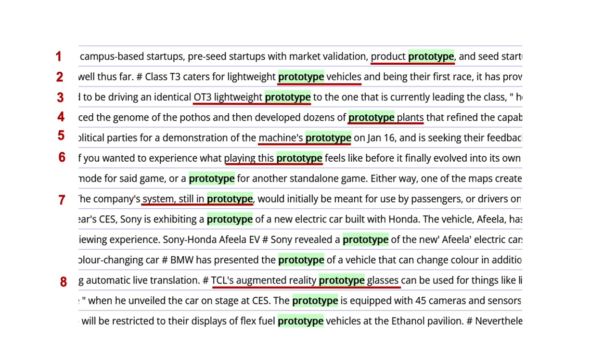The system is in prototype. In line eight, it is augmented reality prototype glasses. These were just eight of the examples that the concordancer found. I think that these examples show the types of knowledge that can help students learn to use new words. Next, I asked Professor Rinaldi what teachers need to know about vocabulary.